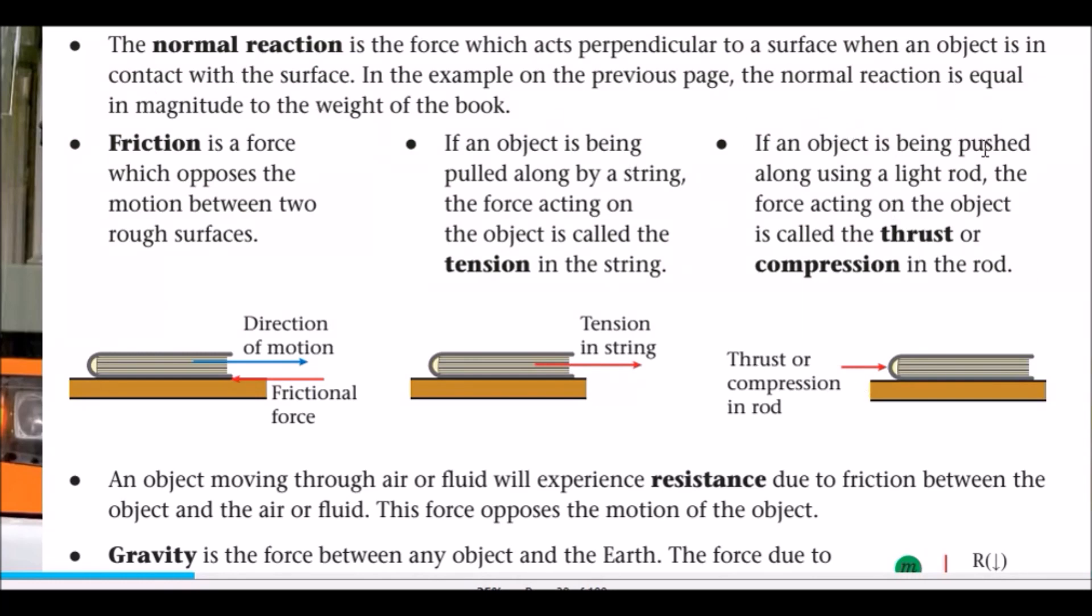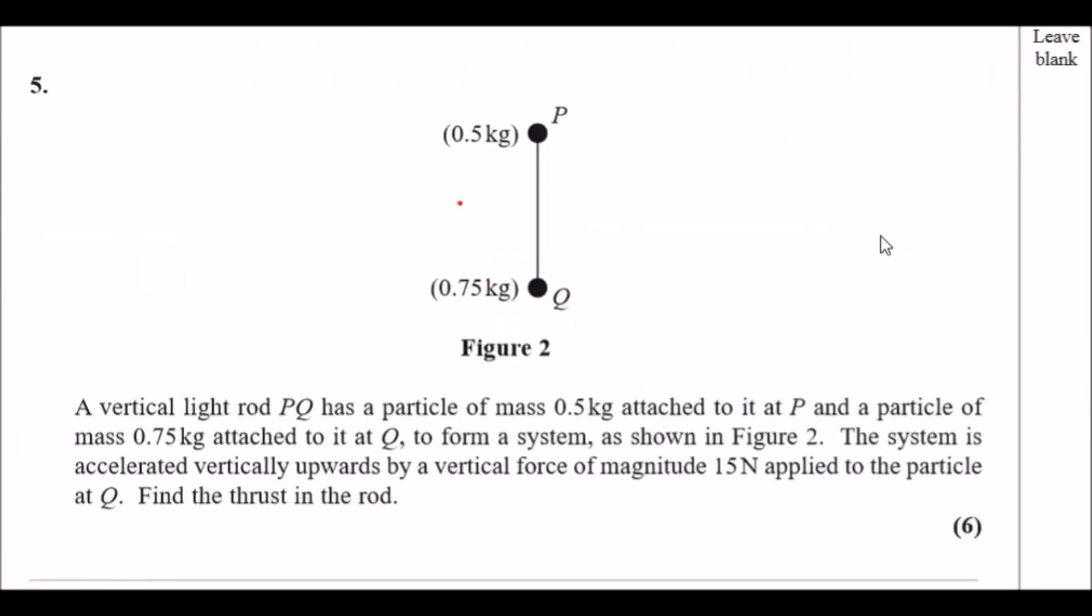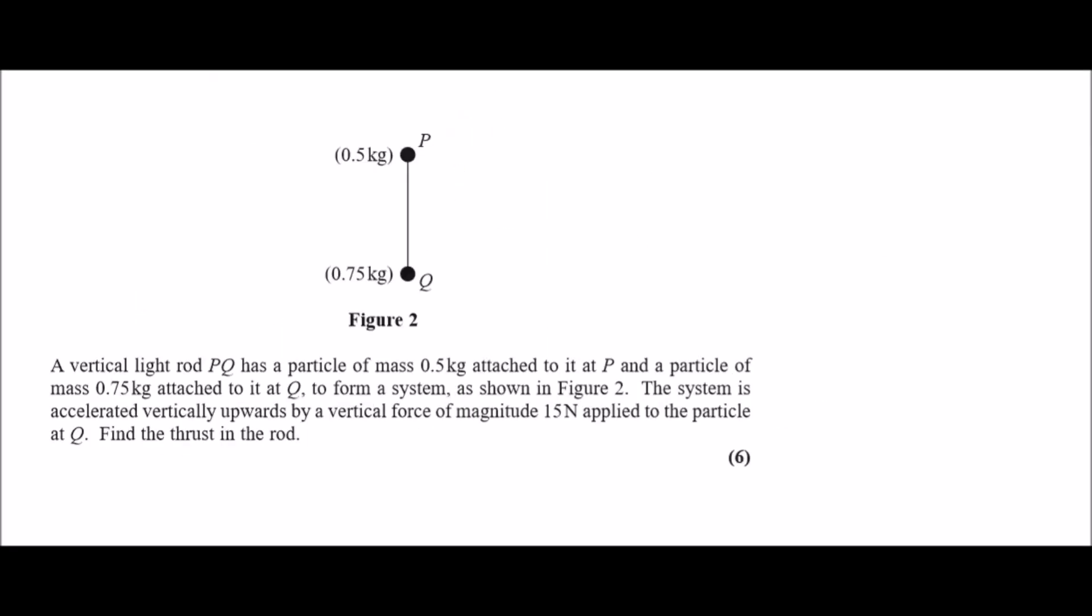It says if an object is being pushed along using a light rod, the force acting on the object is called the thrust or compression in the rod. Have a look carefully - if it's acting towards it, here is a thrust. Now let's get back to the exercise.